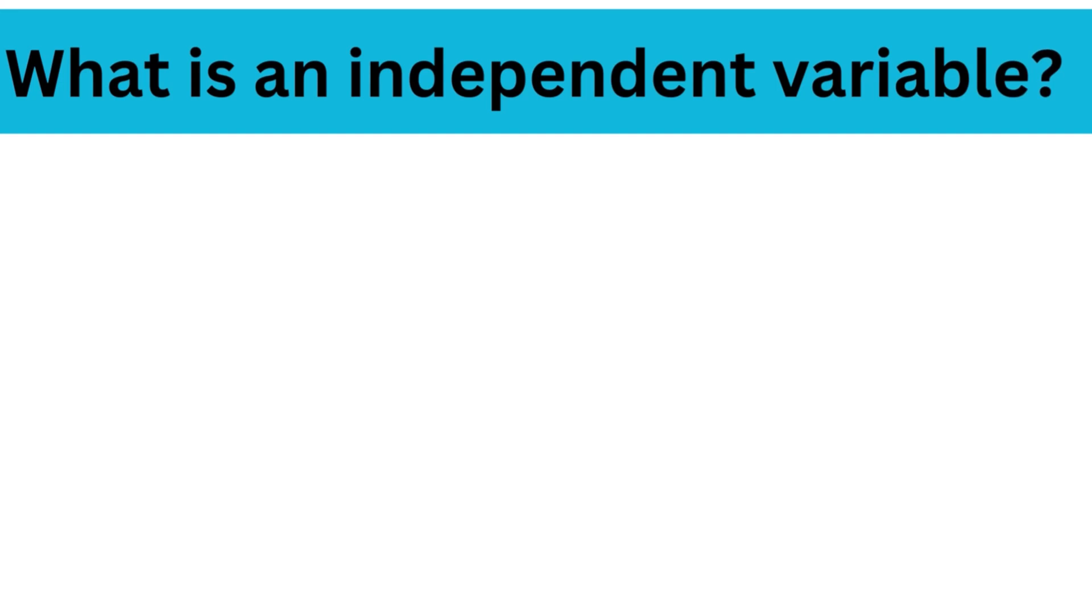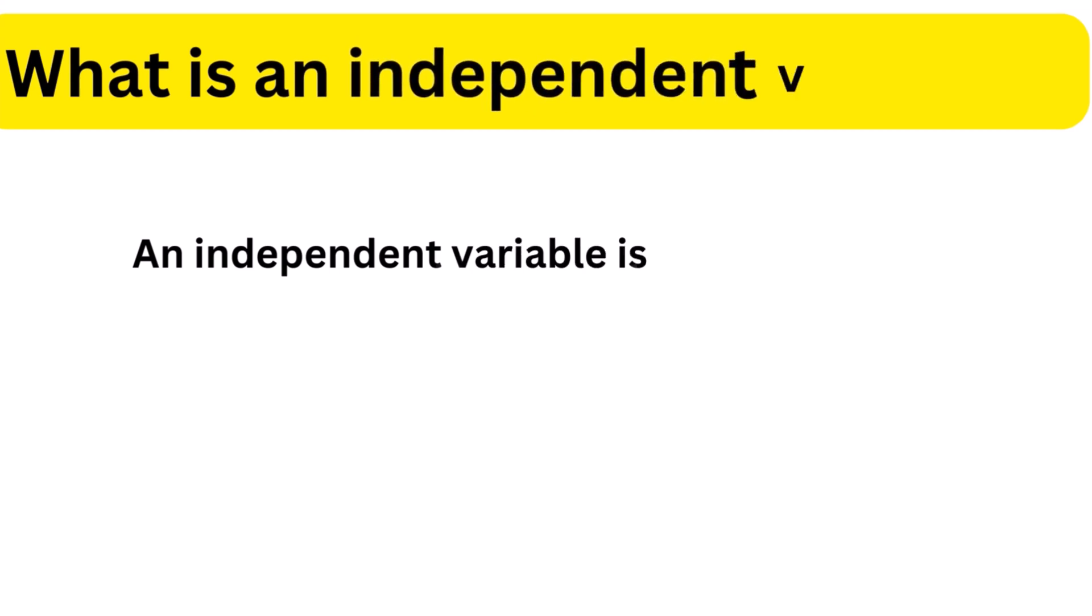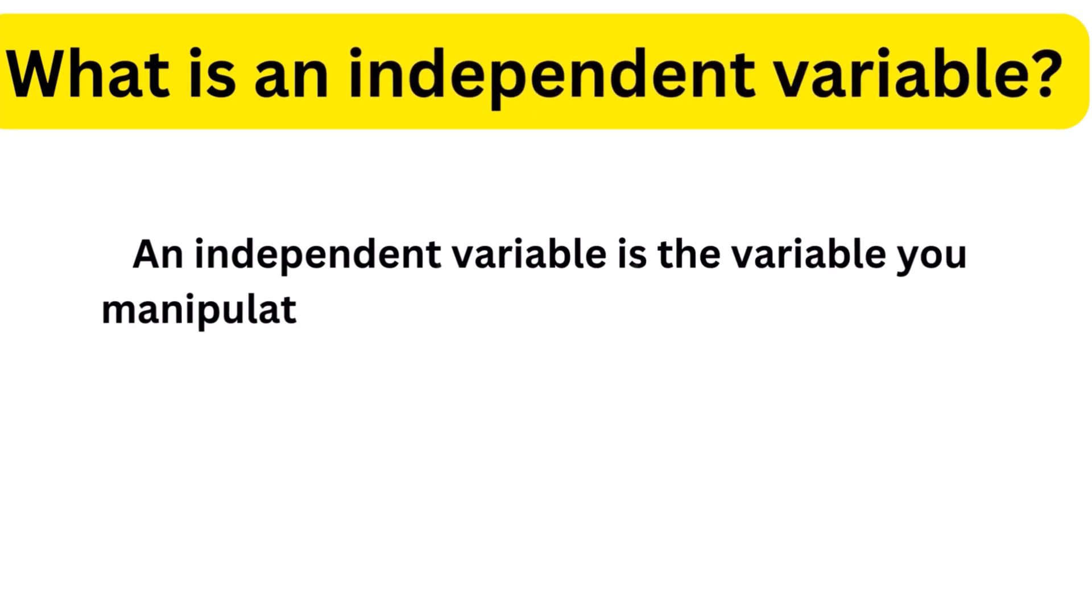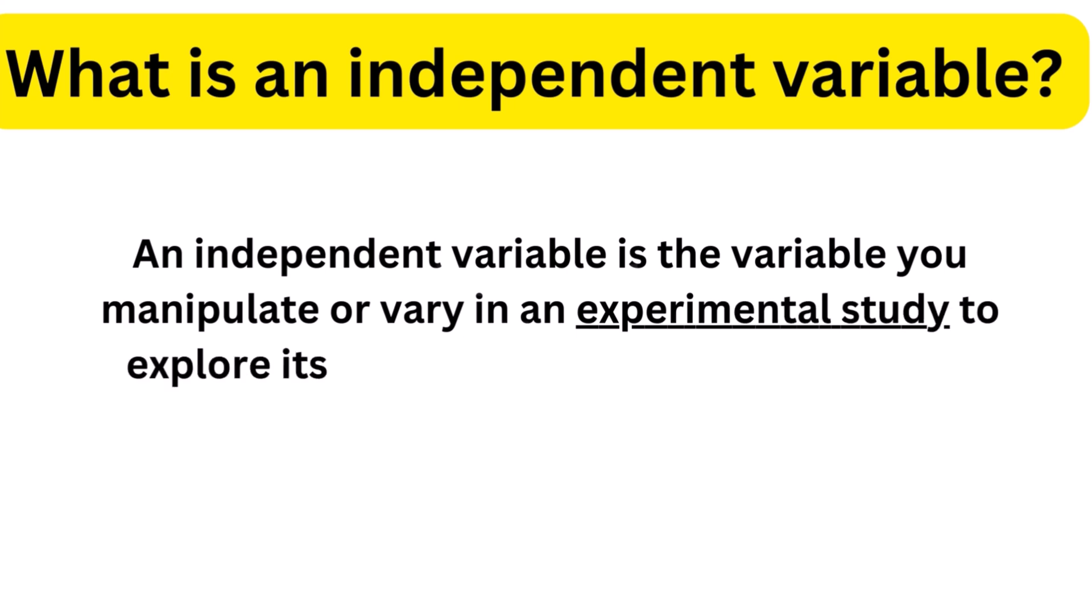The independent variable is the cause. Its value is independent of other variables in your study. An independent variable is the variable you manipulate or vary in an experimental study to explore its effects.